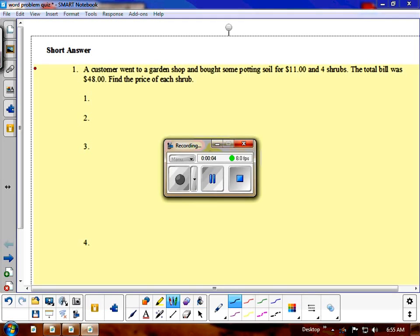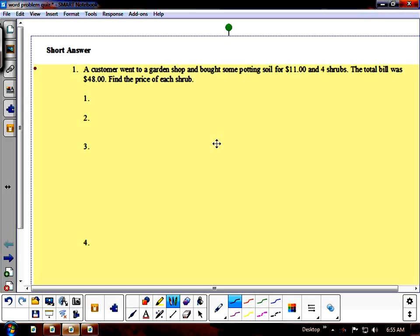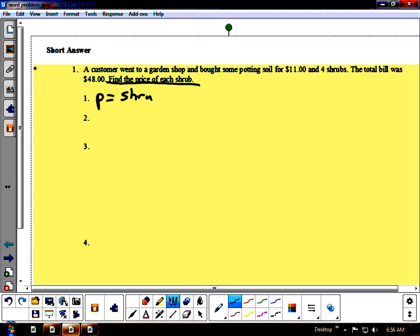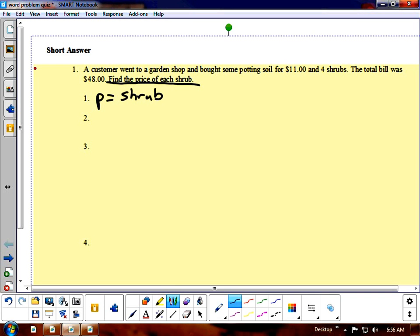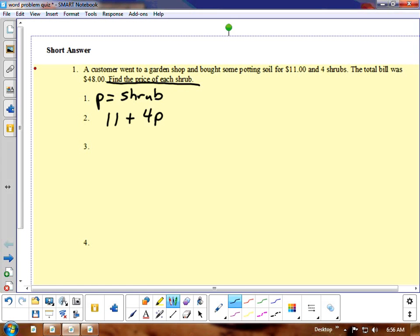This video is a review for the word problem quiz. A customer went to a garden shop and bought some potting soil for $11 and four shrubs. The total bill was $48. Find the price of each shrub. So like we said before, the question usually has the variable in it, so we'll call P equals the shrub. They bought $11 worth of potting soil plus four shrubs. It's going to equal their total of $48.